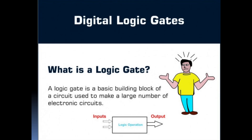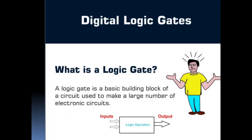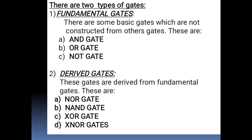Let's understand what is a logic gate. A logic gate is a basic building block of a circuit used to make a large number of electronic circuits. A gate is a circuit with one or more input signals but only one output signal. A gate is a digital circuit because it can take only two values, i.e. either high or low. There are basically two types of gates: fundamental gate and derived gate.